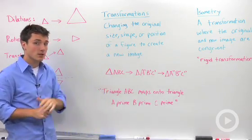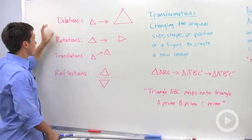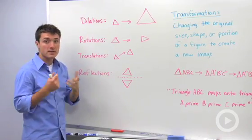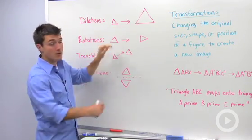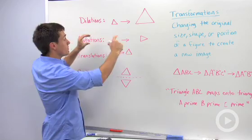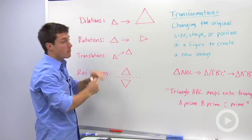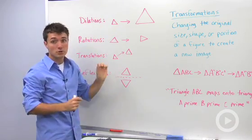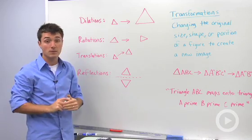Now there are four types of transformations. The first type is a dilation, and dilation is taking a figure and either enlarging it or making it smaller and reducing it. But you're going to keep the dimensions, those ratios, the same, so you're going to create similar figures.